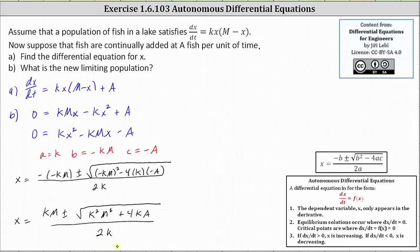Now we're almost there, but we need to analyze this because there's only one solution. The square root of k squared m squared plus four ka is more than km, since the square root of k squared m squared would be km, which means km minus the square root of the sum of k squared m squared and four ka would be negative, which is not possible. Therefore, the limiting population is only the solution with the sum. The limiting population is x equals km plus the square root of the sum of k squared m squared and four ka, all divided by two k.